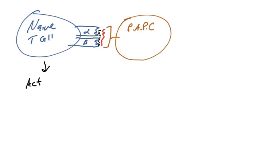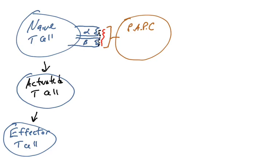This T cell will become an activated T cell via T cell activation, it will proliferate, and it will differentiate into an effector T cell.